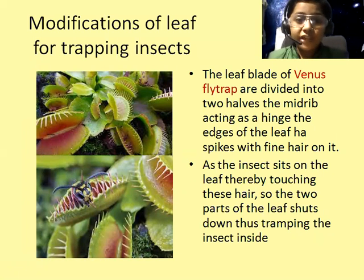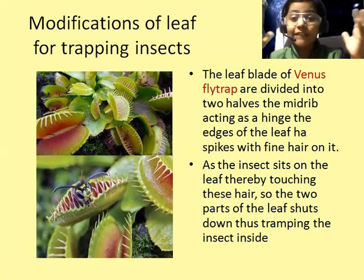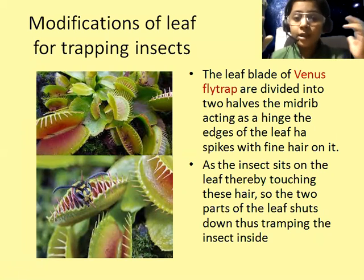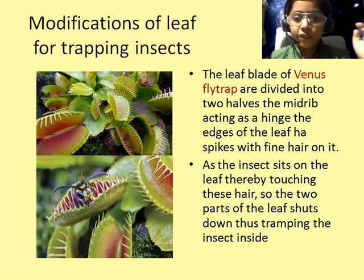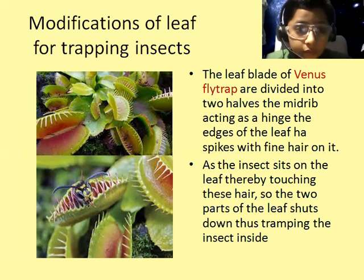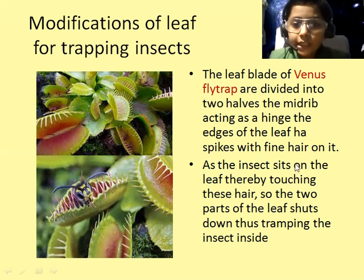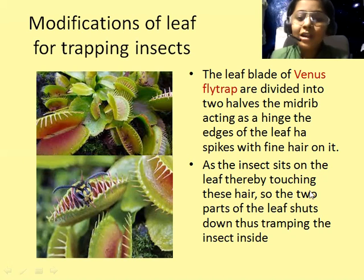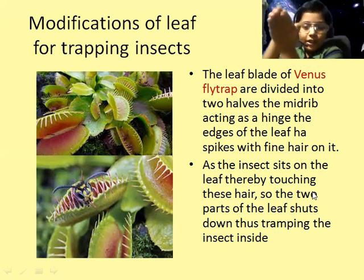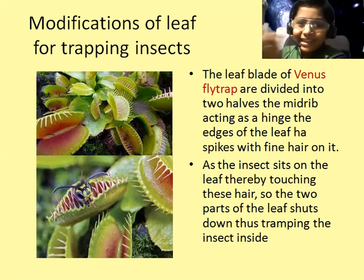Modifications of leaf for trapping insects: the Venus fly trap. The leaf blade of the Venus fly trap has two halves, with the midrib acting as a hinge. The edges of the leaf have spines with fine hair on them. As soon as an insect sits on the leaf, touching these hairs, the two parts of the leaf shut down, trapping the insect inside.